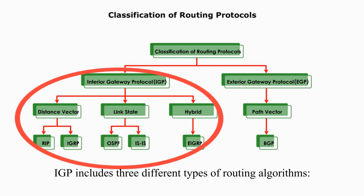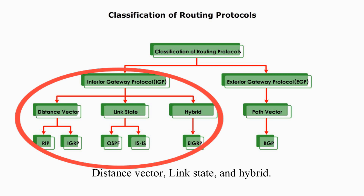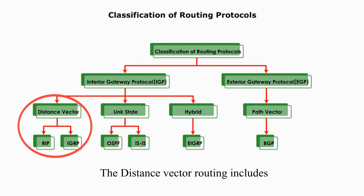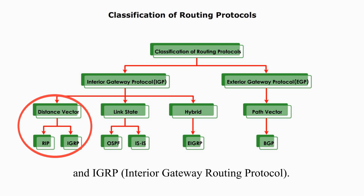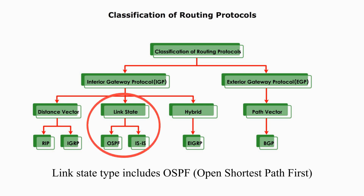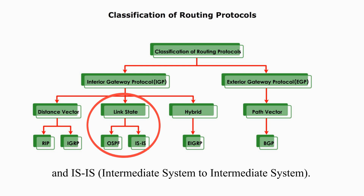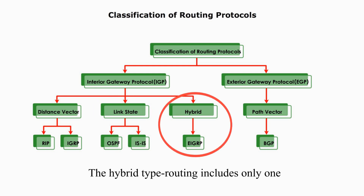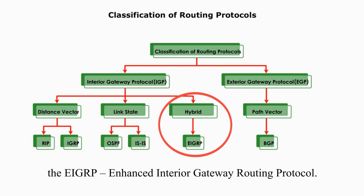IGP includes three different types of routing algorithms: distance vector, link state, and hybrid. The distance vector routing includes RIP, Routing Information Protocol, and IGRP, Interior Gateway Routing Protocol. Link state type includes OSPF and IS-IS. The hybrid type includes only one: EIGRP, Enhanced Interior Gateway Routing Protocol.